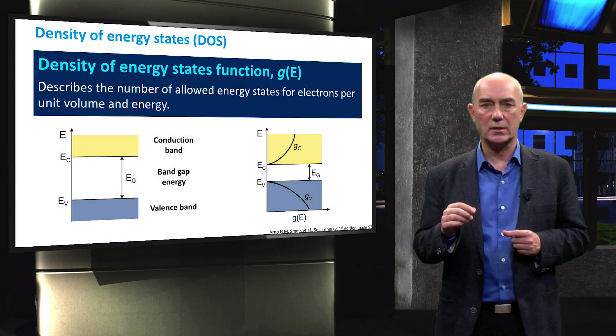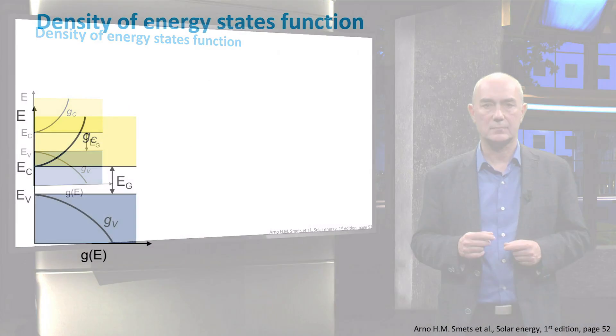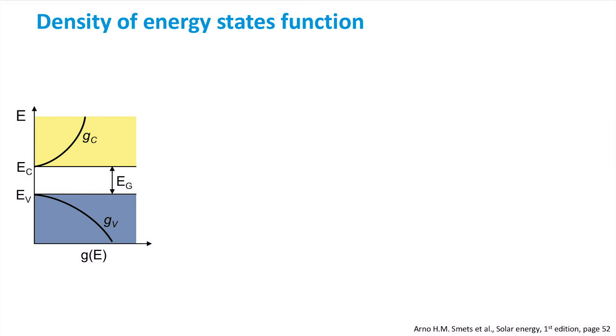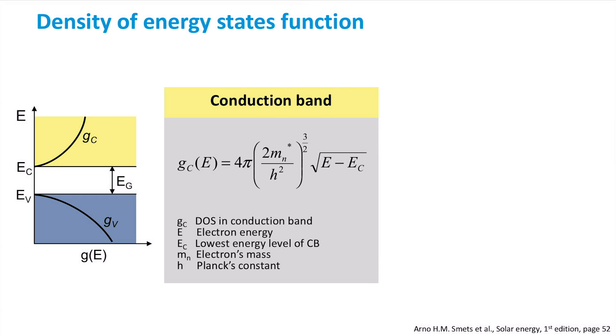Let's look into the equations that represent these densities. Here you see our density of states function plotted again. Let's look at the conduction band. We can express the equation for the density of states in the conduction band as follows. I won't derive this equation, but you can learn more about it in the textbook. The equation is based on a few constants like the Planck's constant and the effective mass of an electron. However, please note that the dependence on energy is a square root relationship.